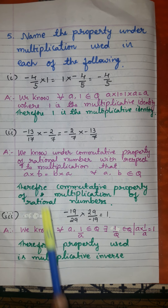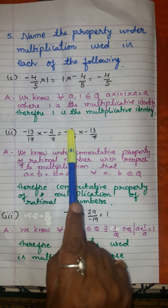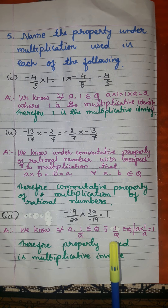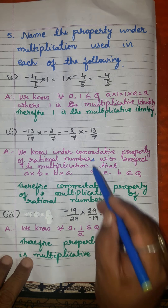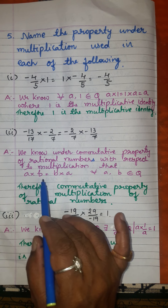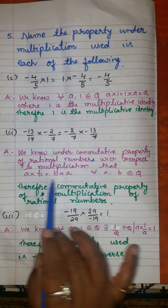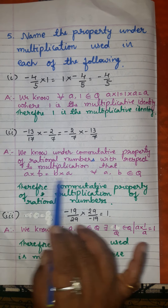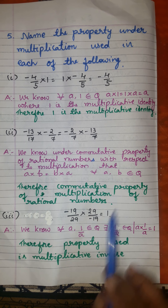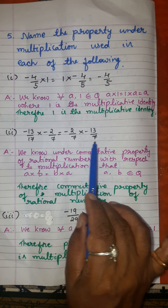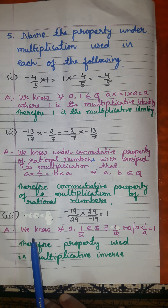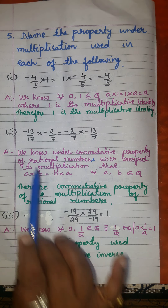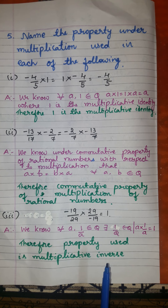Now look at the second sub-part: minus 13 over 7 into 7 over minus 2 equals minus 13 over 7. We know under commutative property of rational numbers with respect to multiplication, A into B is equal to B into A. Here we are finding the product of two numbers by interchanging the rational numbers. For all A, B belonging to Q. Therefore, this multiplication tells us the commutative property of multiplication of rational numbers.